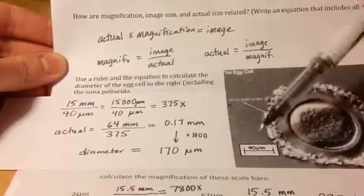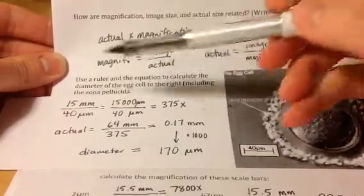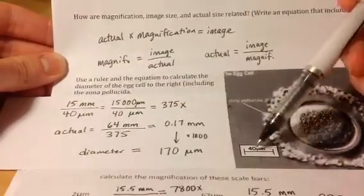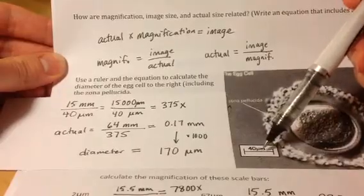What you have to do is actually measure on the paper how big that scale bar is. I measured it to be 15 millimeters, and the label says that that represents 40 micrometers of actual size.